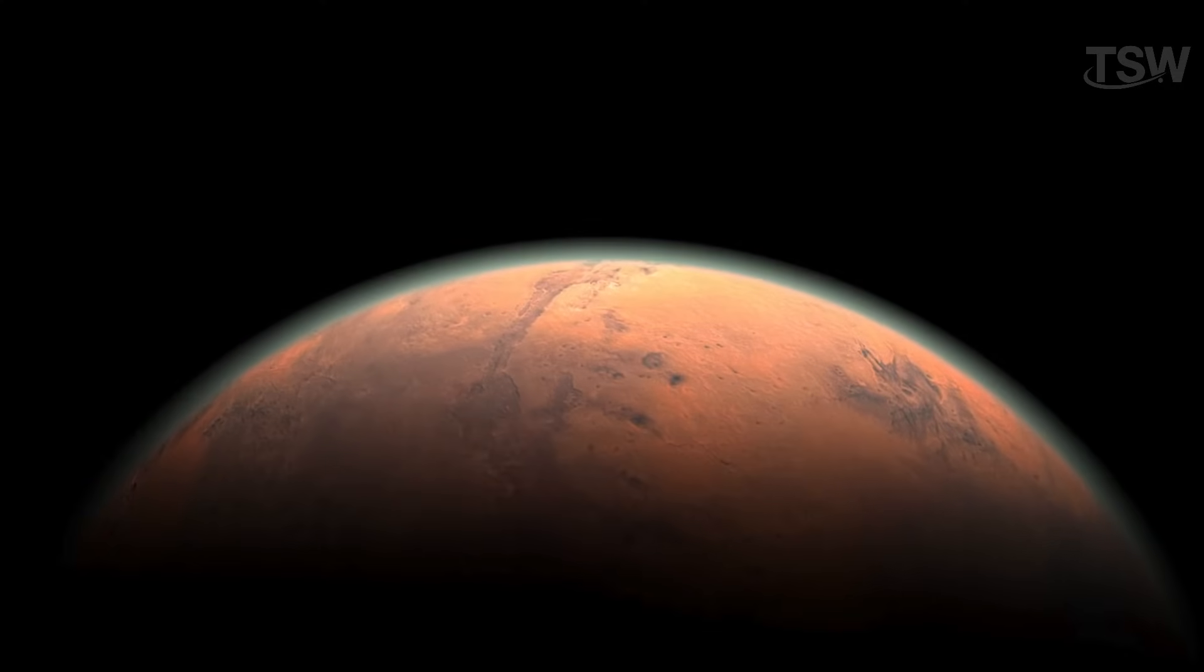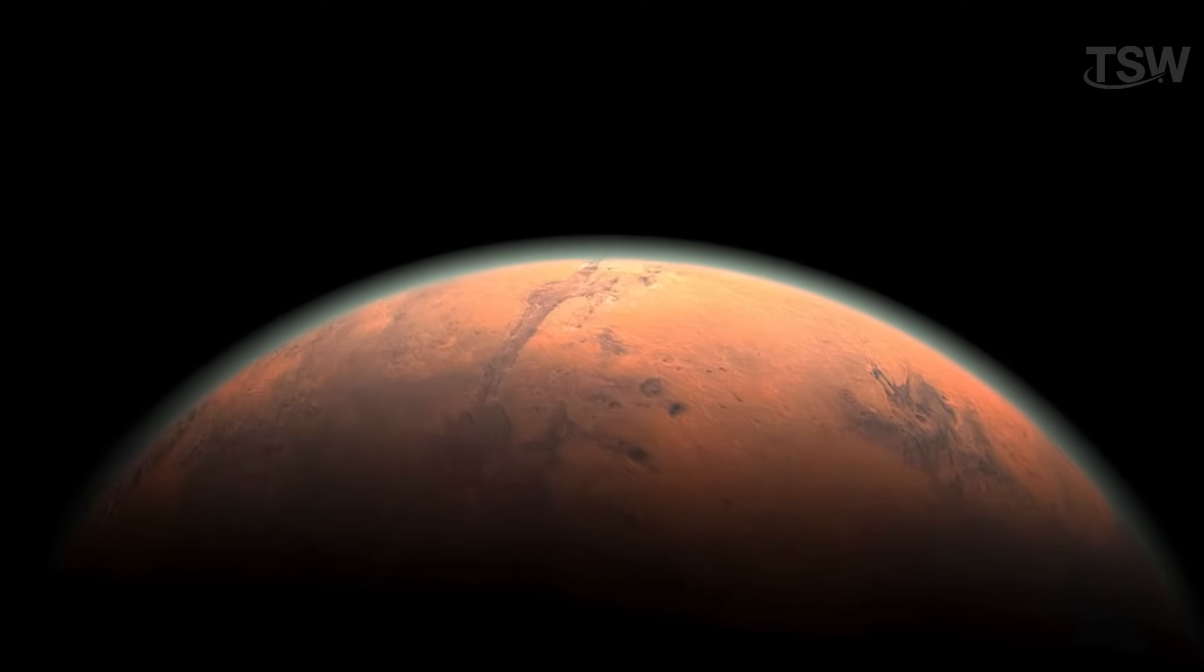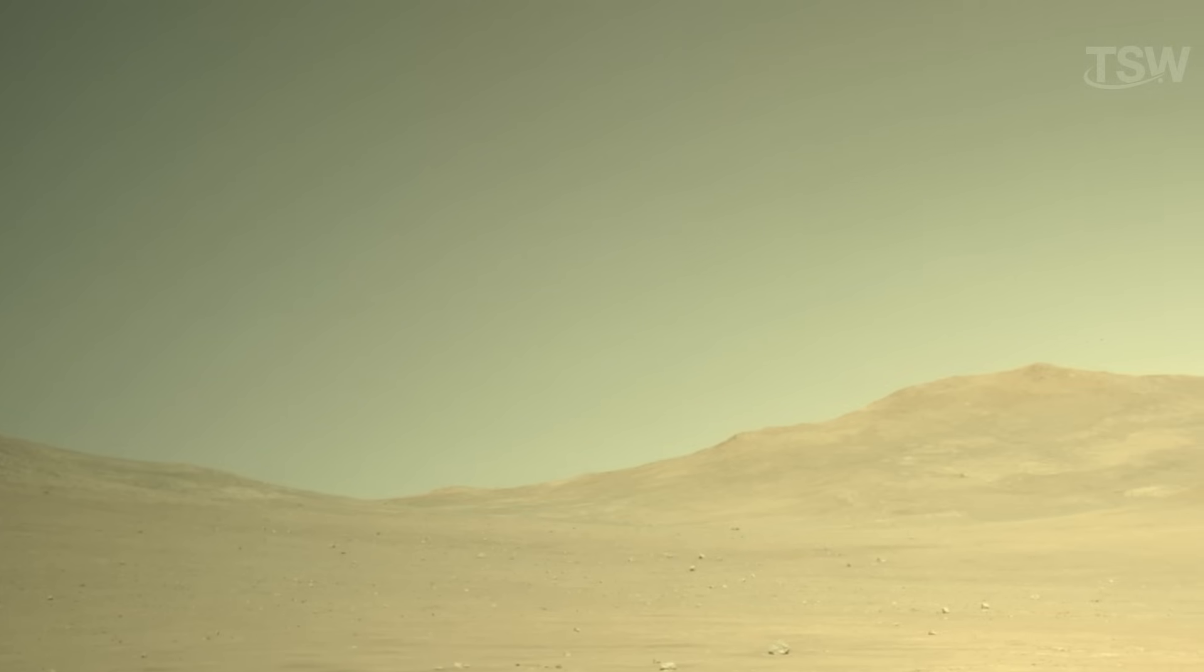Even on Mars, which has an atmosphere about 100 times thinner than Earth's, there are still enough molecules to give the sky a grayish-blue tint. In other words, even a thin layer of gases can completely change the way we perceive the sky.